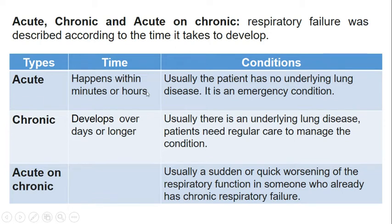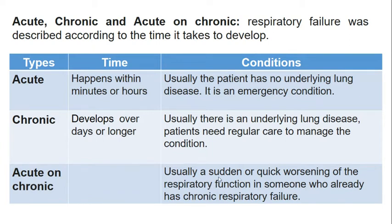Usually the patient has no underlying lung disease in acute cases, so it is an emergency condition. Chronic respiratory failure occurs over days and usually involves an underlying lung disease. Patients need regular care in order to manage the condition. Acute-on-chronic is a sudden or quick worsening of respiratory function in someone who already has chronic respiratory failure.